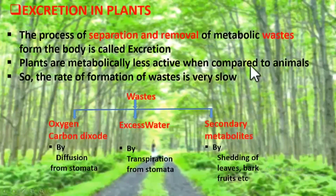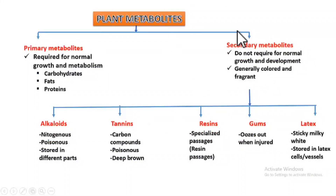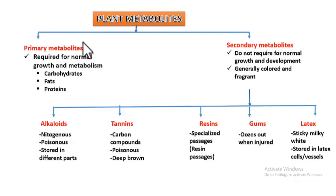What about secondary metabolites? Plants produce two types of metabolites. Metabolites are the products of metabolic reactions. The two types are primary metabolites and secondary metabolites.